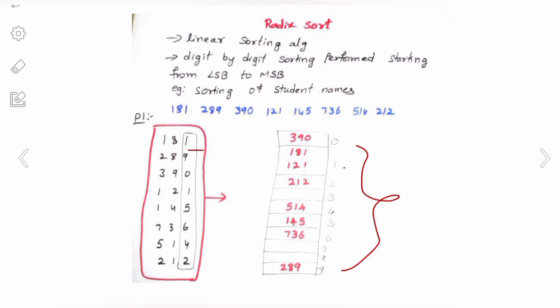After the first pass, all numbers are arranged into pockets. For 289, the least significant digit is 9, so it goes into index 9. For 390, the least significant digit is 0, so it goes into index 0. For 514, the last digit is 4, so it is placed in the fourth index. After the first pass, the elements are arranged in this manner.